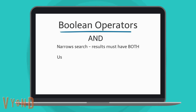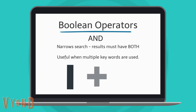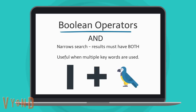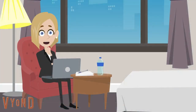The use of AND can narrow your search and is extremely helpful when searching for information where all your keywords are used, such as both the words parrot and bird are found. You do have to be careful with AND because you can overly narrow your search if you are not careful.